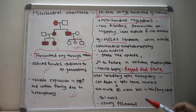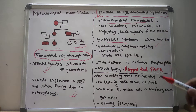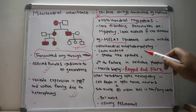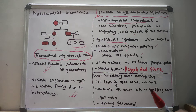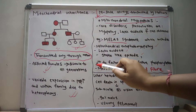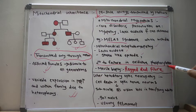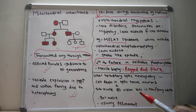MELAS syndrome includes mitochondrial encephalomyopathy, lactic acidosis, and stroke-like episodes in the person. Mitochondrial myopathies occur secondary to failure of oxidative phosphorylation.